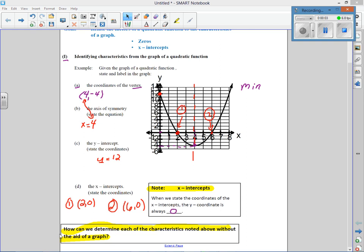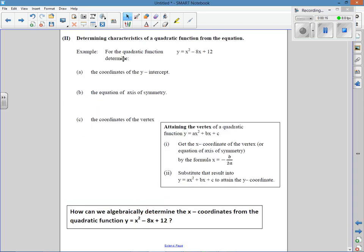Okay, we ended our last video with this question. How can we determine the characteristics noted above without the aid of the graph? So how can we find the vertex, axis of symmetry, y-intercept, and the x-intercepts without using a graph? So now we'll concentrate on that here.